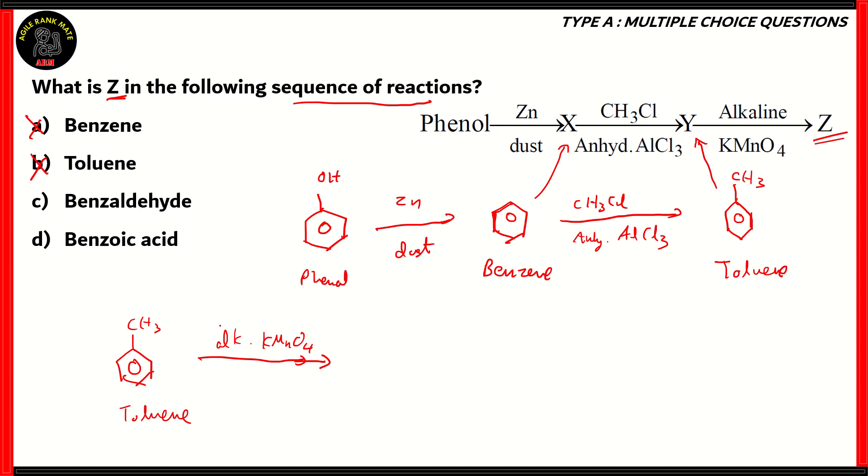The methyl group turns into a carboxylic acid group. So CH3 turns into COOH. So what we get is benzene with a carboxylic acid group. That is what we call benzoic acid.